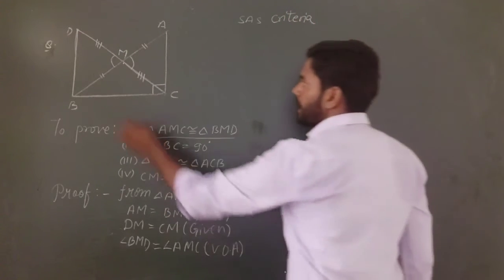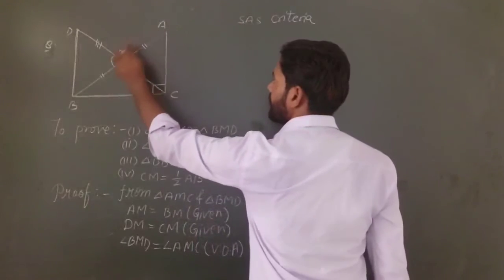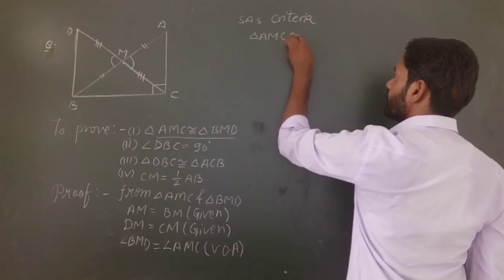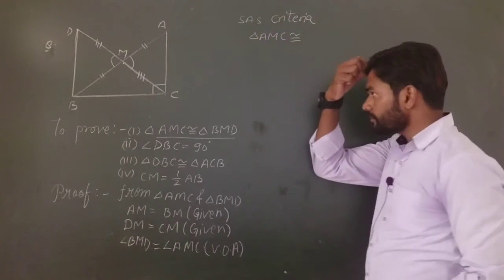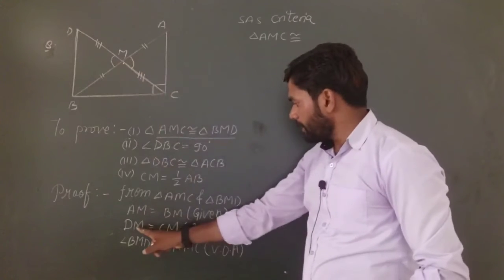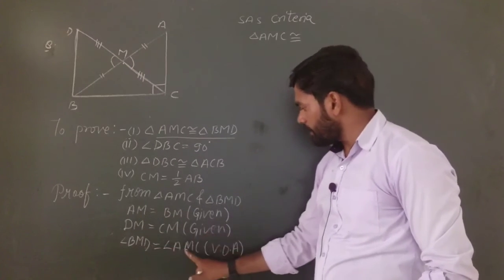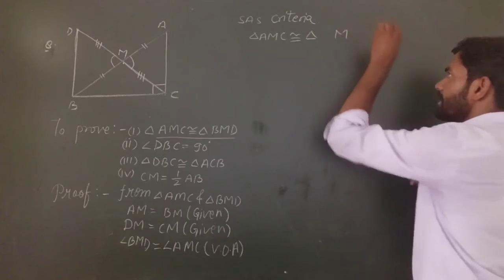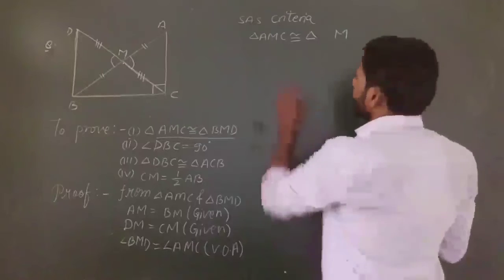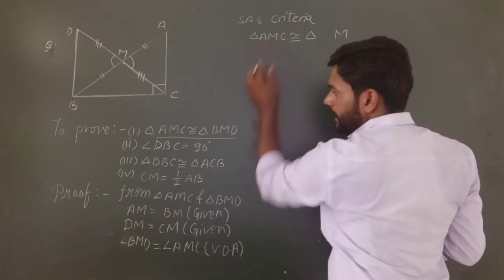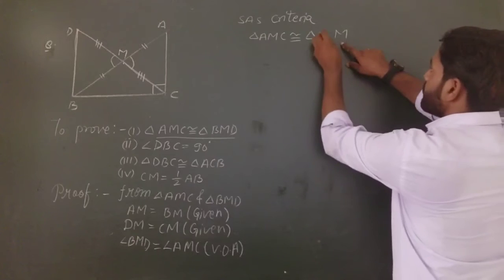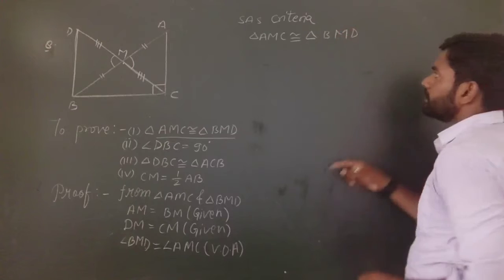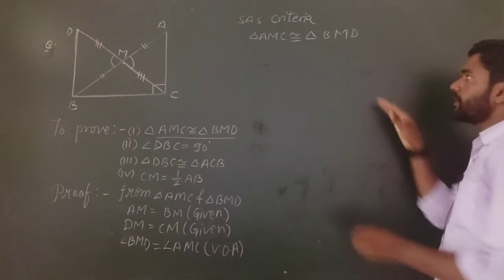Triangle AMC is congruent to triangle BMD. In the correspondence, M is at center in both triangles, so A↔B, M↔M, C↔D. The first part is proved.